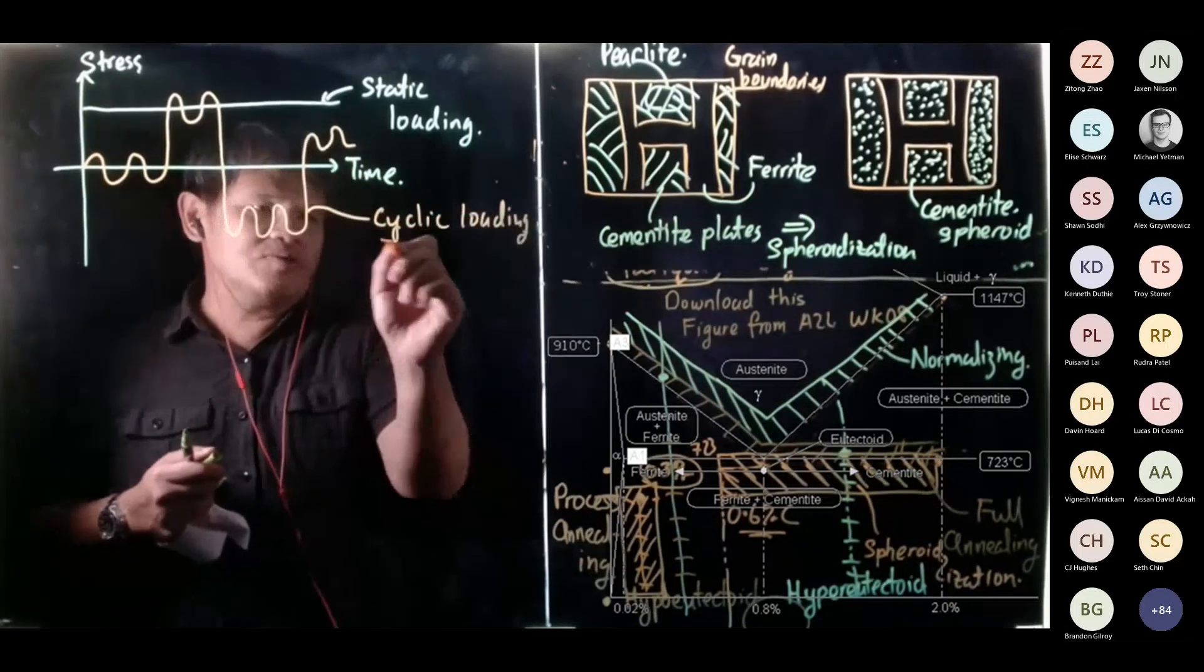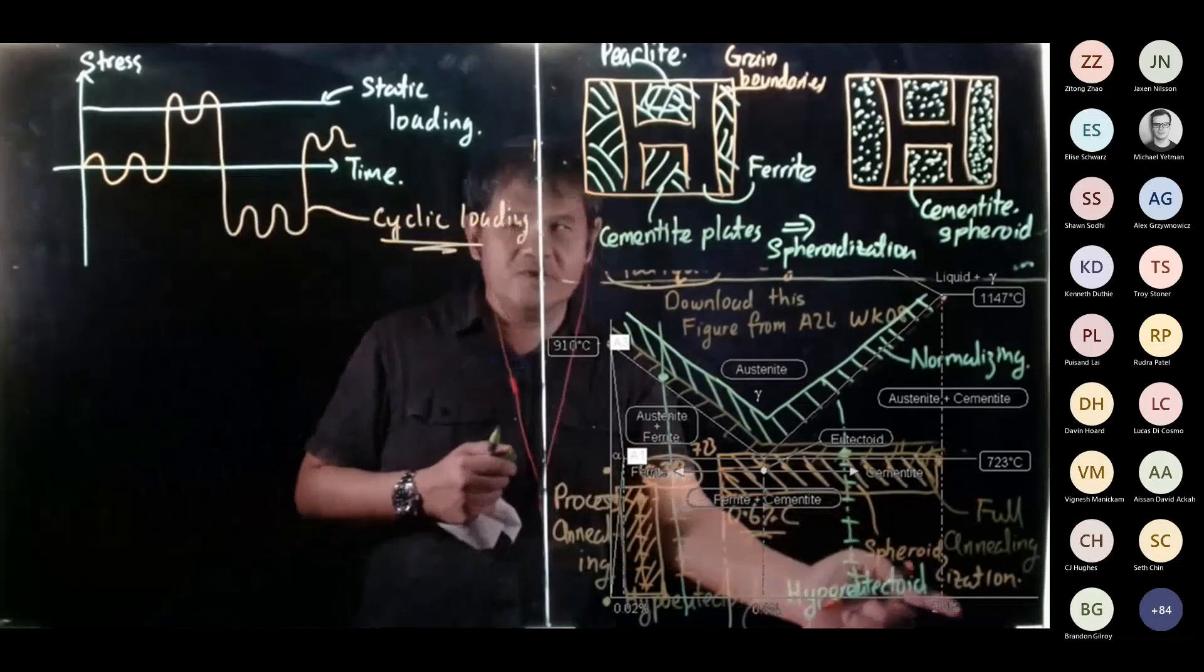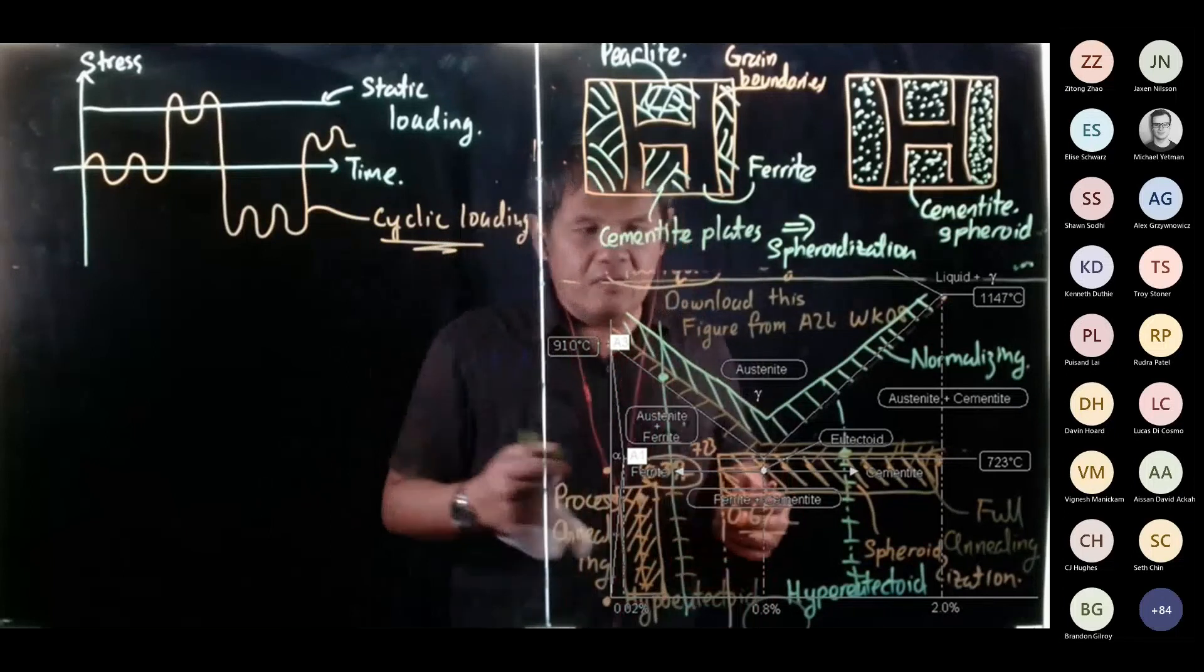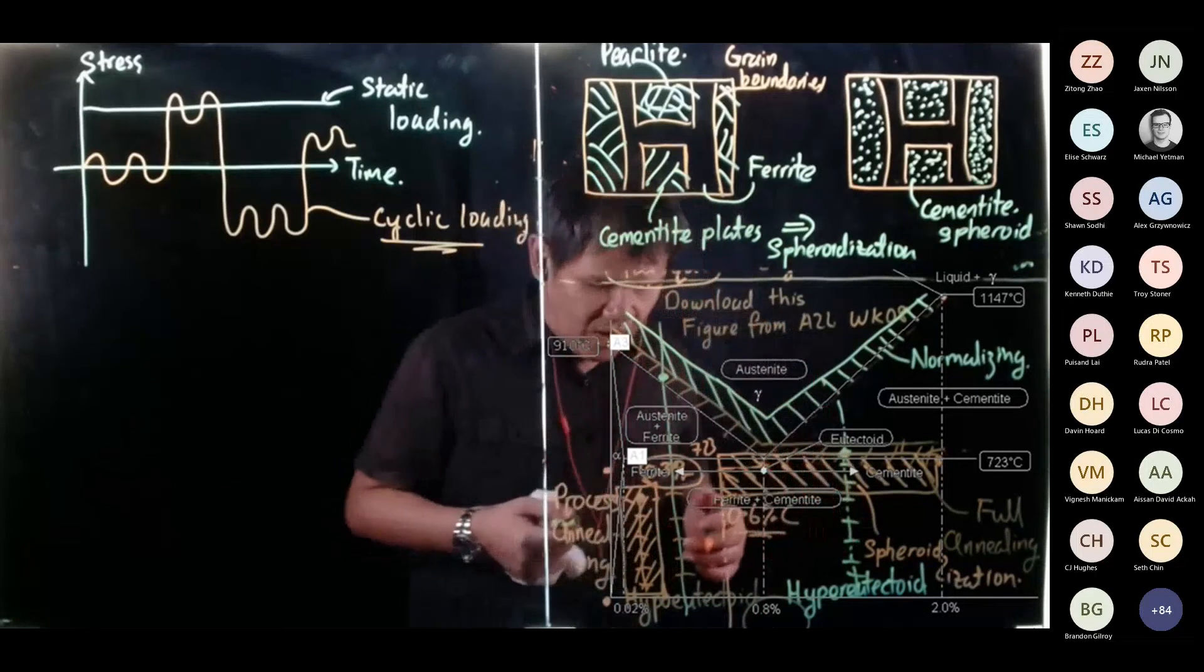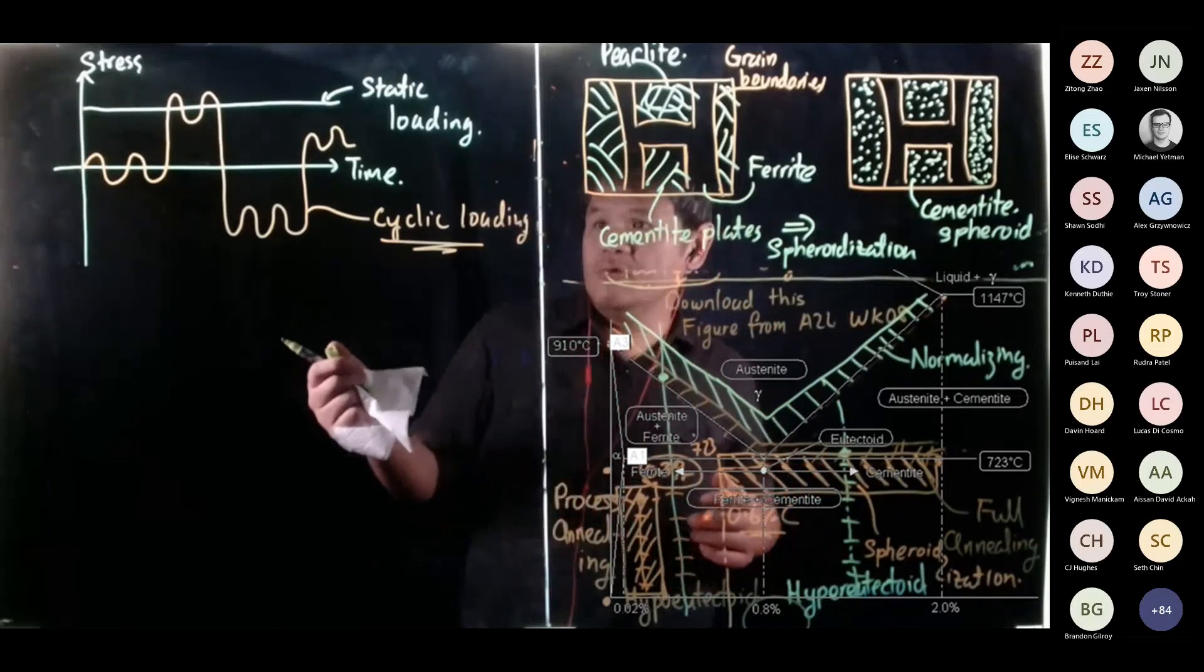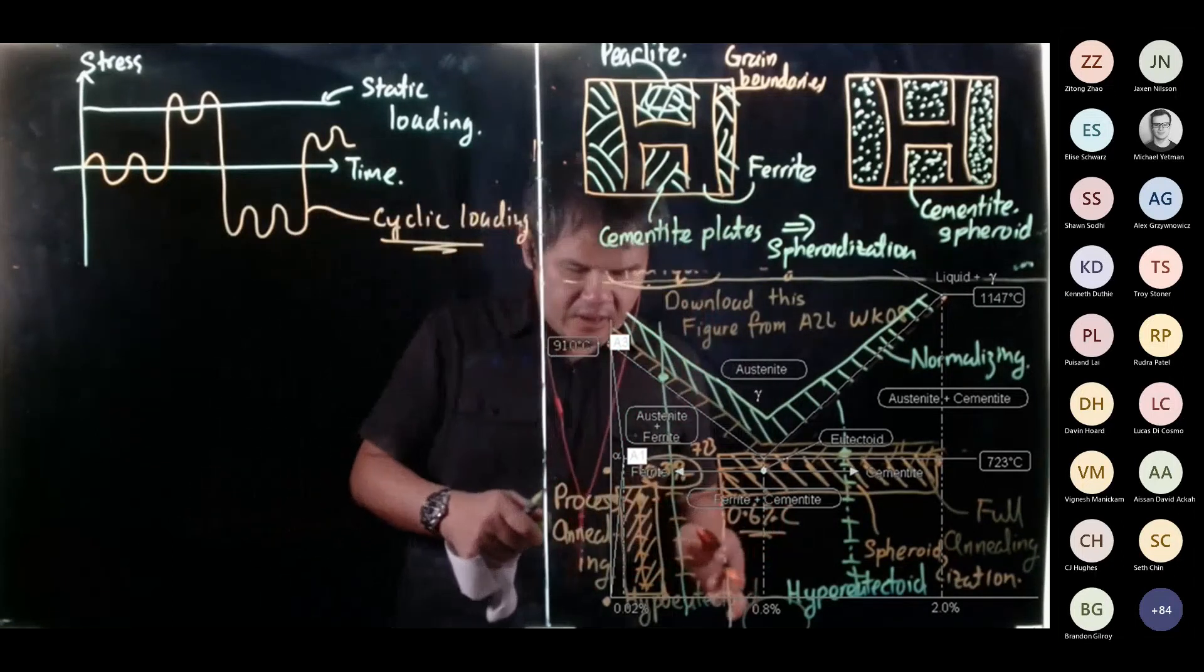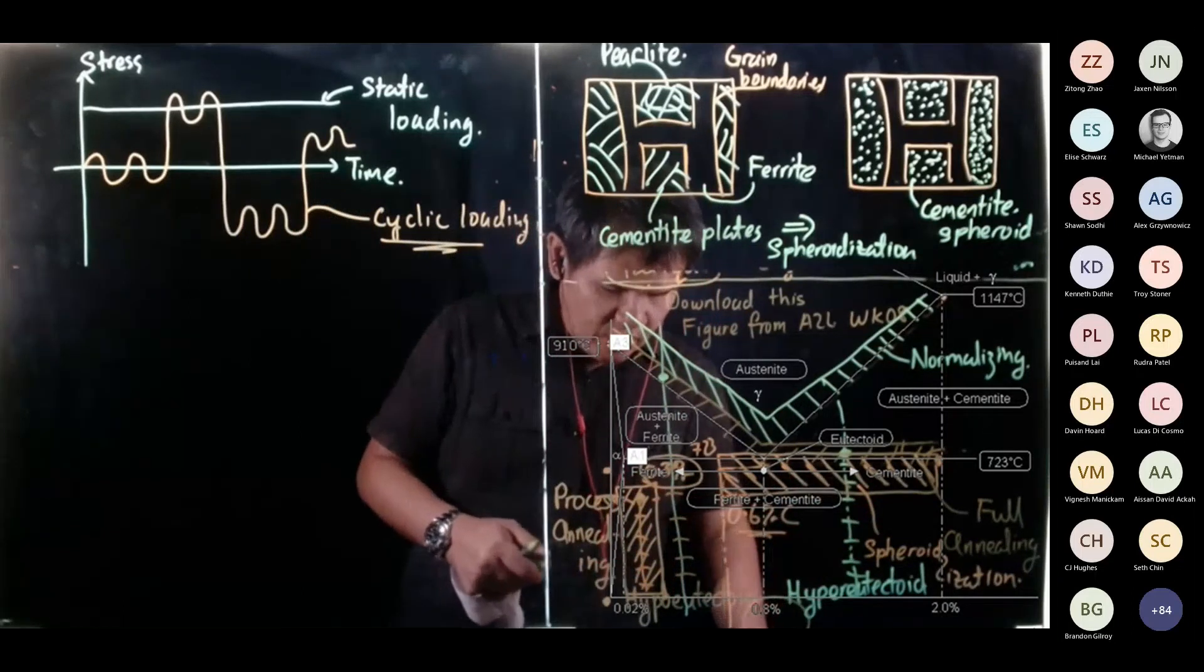And we only need to carry out spheroidization when we have cyclic loading. So why do we have to do this when we carry out our cyclic loading? So I'll write out why and I will draw to you what is going on.